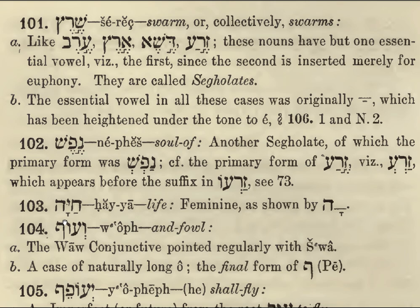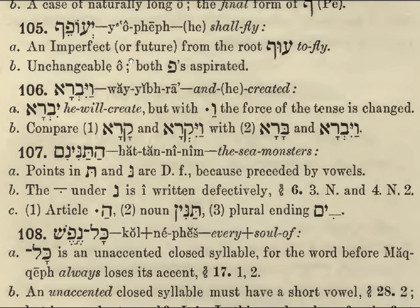Naturally long O, and the final form of the letter P here — remember that this is the hanging form. You have the curled-in form in the middle of a word. If this curled limb were to become limp, it would suddenly hang down straight, as it does here — this is the final form. Yenghof — he will fly. So here we have an imperfect or future from the root Ngof, to fly. Both of the F sounds here are aspirated — they don't have the Dagesh.